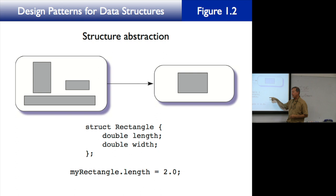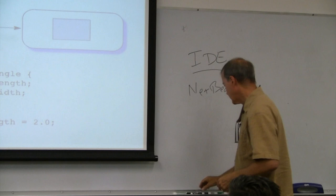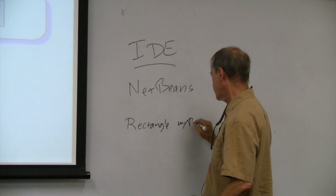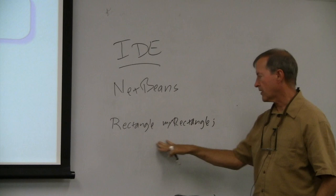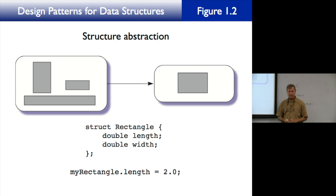In this struct, 'struct' is a C++ keyword, but 'Rectangle' is a programmer-defined identifier. The programmer is saying that a rectangle has a length of type double and a width of type double. If you declare a variable myRectangle of type Rectangle, you access its parts with the dot operator.